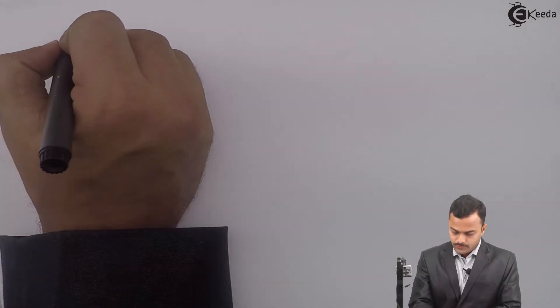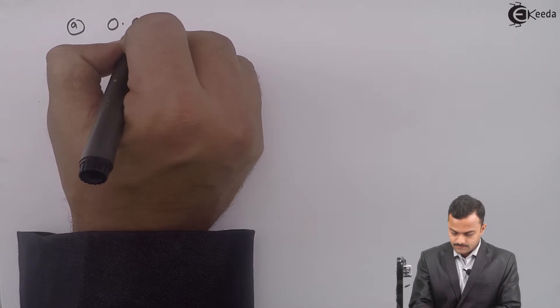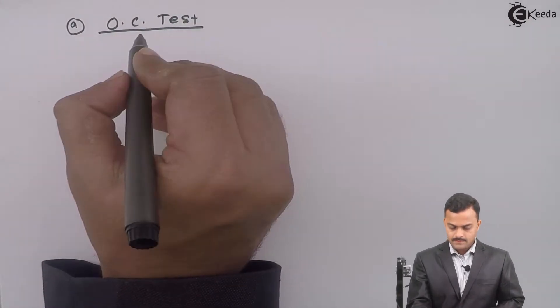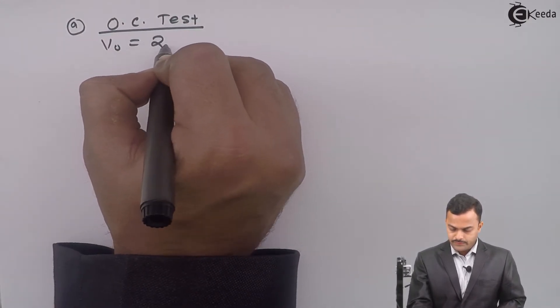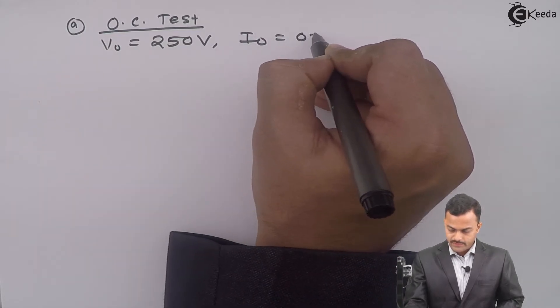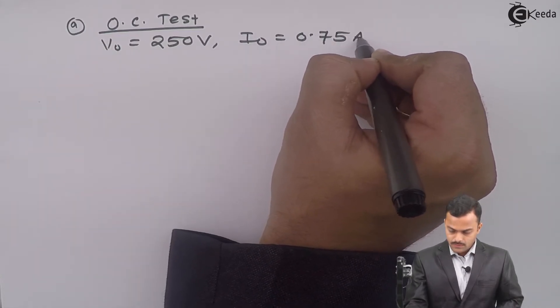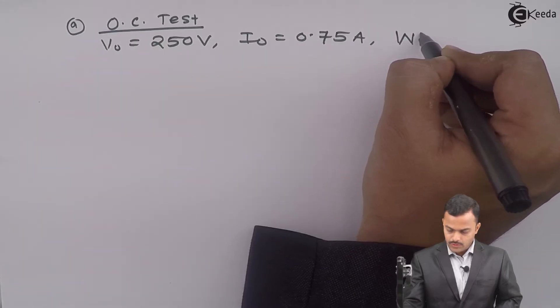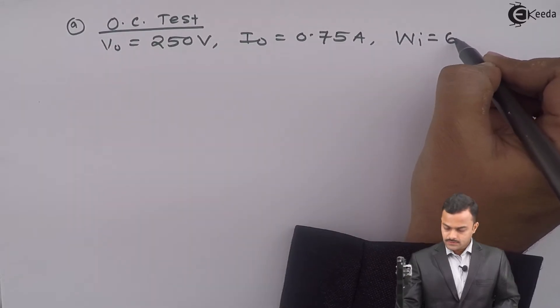Let us obtain the circuit constants first using OC test. V0 is 250, I0 is 0.75 ampere and W in OC test is 60 watt.